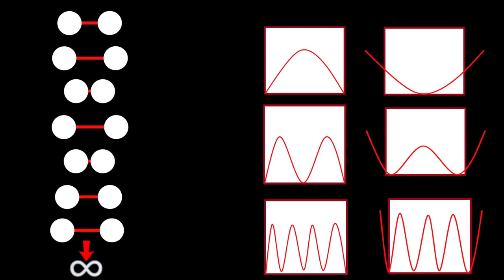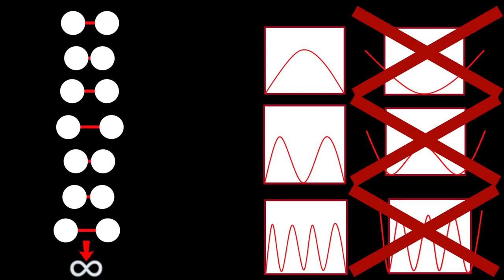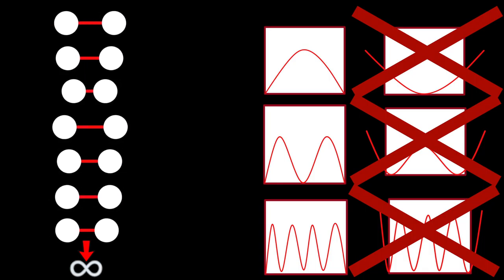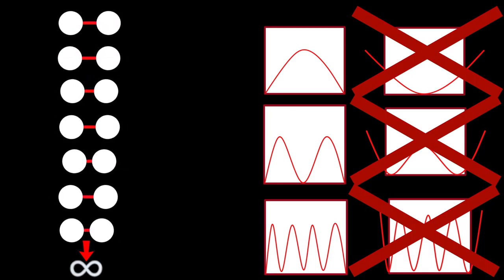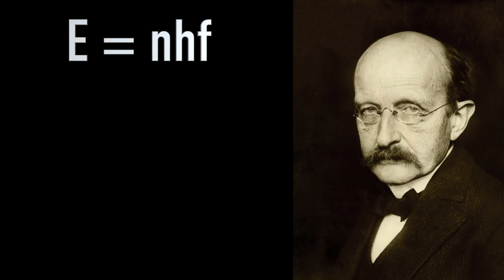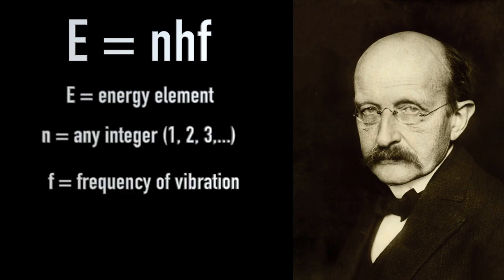The problem with the classical model was that it assumed that particles could exist at an infinite number of possible energy levels. By limiting the energy levels to whole integers and setting the minimum energy equal to the frequency of vibration times a very small number, Planck stated that E = NHF, where E equals energy, N is any integer, F is the frequency of vibration, and H is a proportionality constant, which became known as Planck's constant.